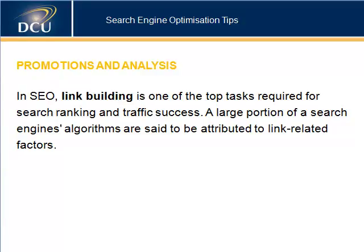Professional SEOs consider the following for search engines to assign value to links and a site's link profile. First, popularity — the more links to your site from a popular and important site, the easier it will be to earn the trust of search engines. Second, anchor text — optimising anchor text is one of the strongest signals engines use in rankings. If scores of links point to a page with the right keywords, that page has a very good probability of ranking well for the targeted phrase. Use short but meaningful anchor text that provides information in context, explains what the link offers, and is not a verb phrase.